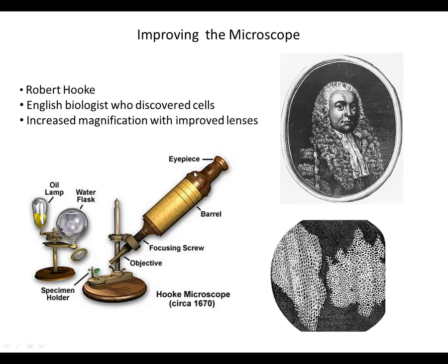If we look at Hooke's microscope, it still is quite different from what we use in class, but you have the familiar eyepiece and the familiar objective lens that we would use today. Interestingly, there's no electrical light source. What Hooke would do is use an oil lamp to produce light, and that light would be concentrated through water and shone upon the specimen he was looking at. This was really a big step forward — this improved microscope allowed for the development of what we call the cell theory.